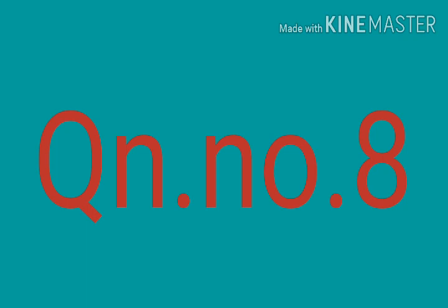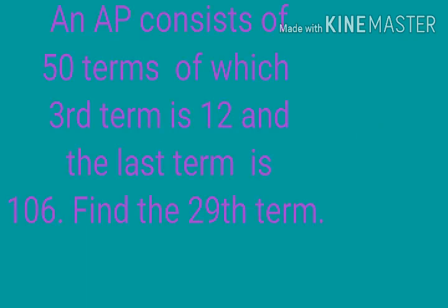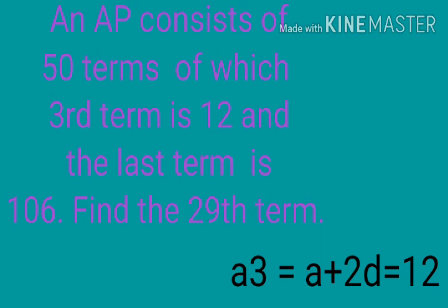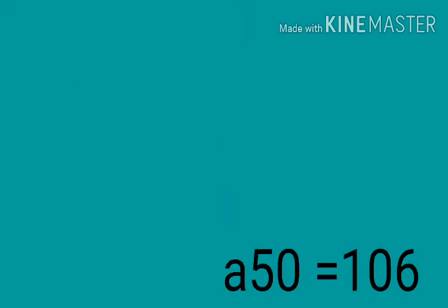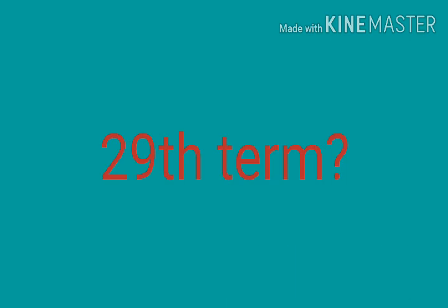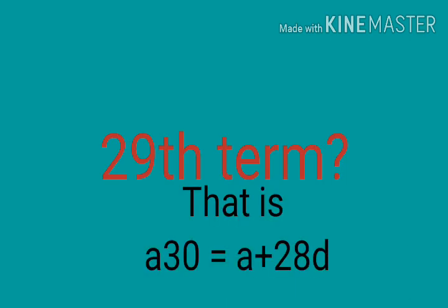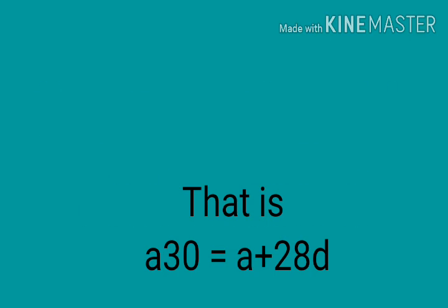Question number 8. An AP consists of 50 terms of which the third term is 12 and the last term is 106. Find the 29th term. 50 terms means N equal 50. Third term is 12 means A plus 2D equal 12. Last term is 106 means AN equal A50 equal 106. Find the 29th term means A plus 28D we need to find.